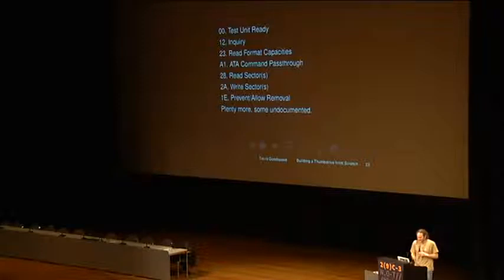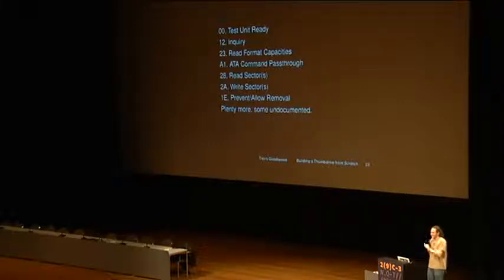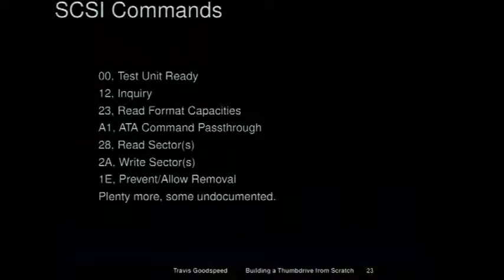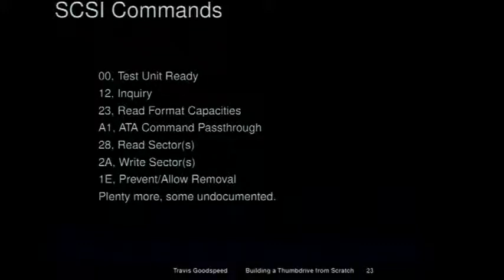There are the 28 and 2A commands — read and write sectors — but it's not quite that simple because this is a very old standard. They kept having to increase the number of bits describing the block address by making separate read and write commands, so there are four or five different read commands and write commands, any of which might or might not be supported by any given disk. There's also the 1E verb — prevent or allow removal — which is how you can make a CD-ROM drive refuse to eject. These are spread around different SCSI standards, and it's not clear which you should be reading for a USB SCSI disk, so driver authors all have different feature sets — and you can use this to fingerprint the host.